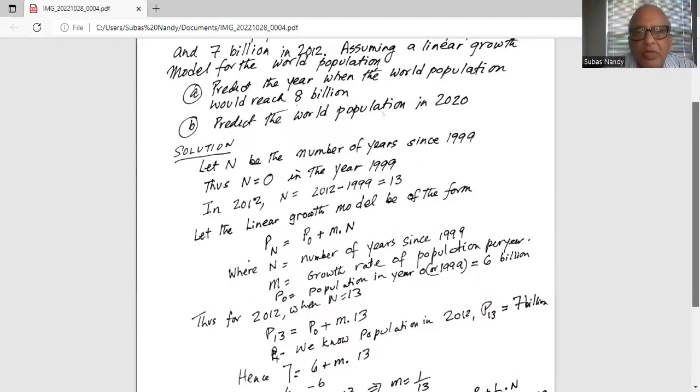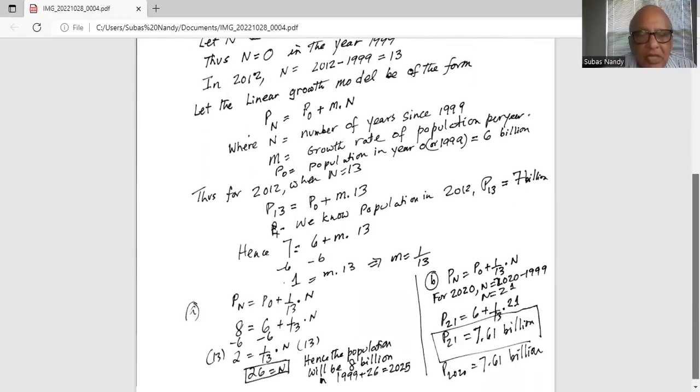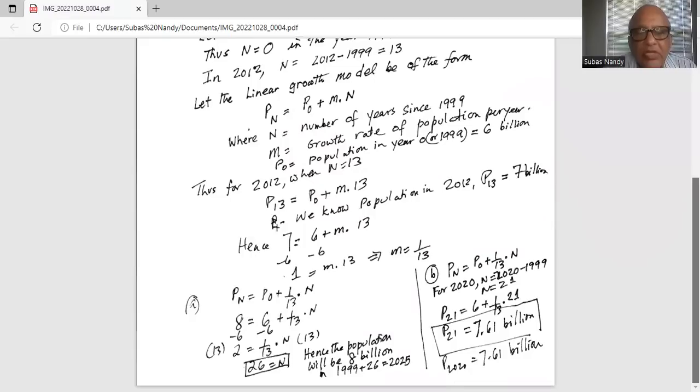Now we will do part A. Find the year when the world population would reach 8 billion. So we have the equation Pn. This is the explicit equation for the growth of the population. Pn equals P0 plus 1 over 13 times n, where n is the number of years since 1999.